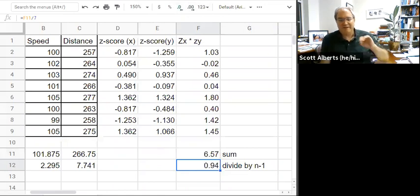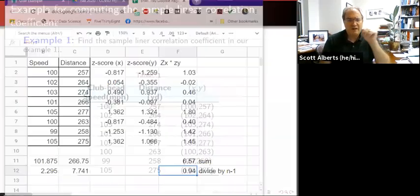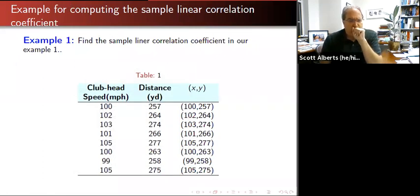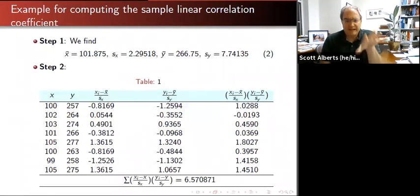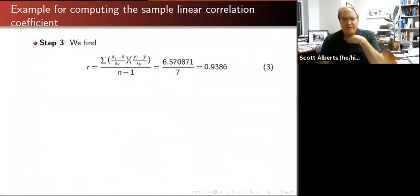Because again, we don't need to have a million decimal points. So 0.94 is a pretty strong relationship, which matches what we saw in the graph, that there was a pretty strong relationship between how fast you hit the golf club and how far it goes. Okay, so again, we worked that out. We got the number and we divided to get the actual answer.